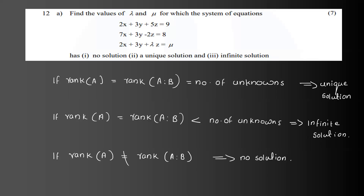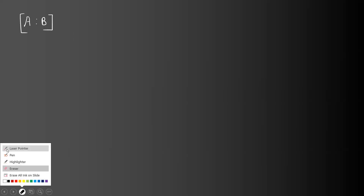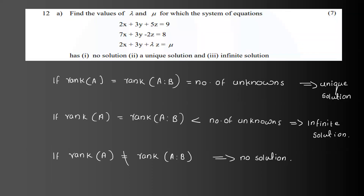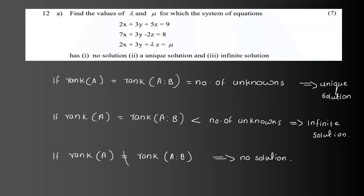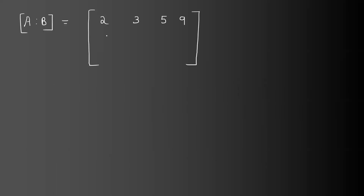Now write matrix A, then the augmented matrix [A|b]. Combine the coefficient matrix with b. The augmented matrix [A|b] is: first row 2, 3, 5, 9; second row 7, 3, -2, 8; third row 2, 3, lambda, mu.